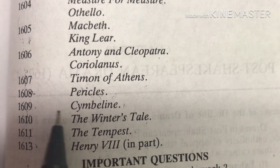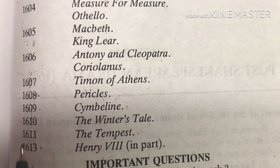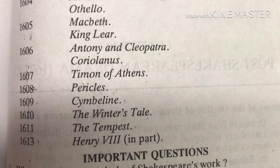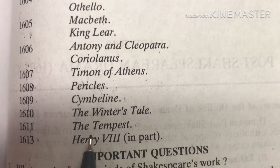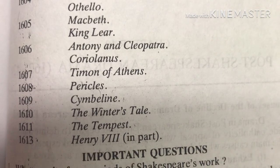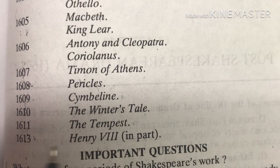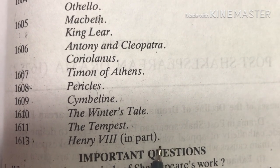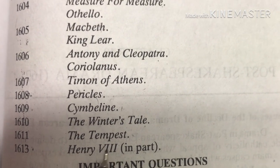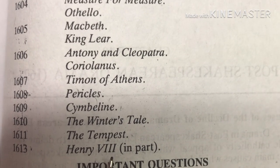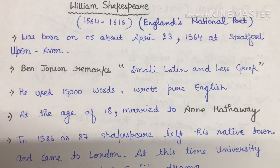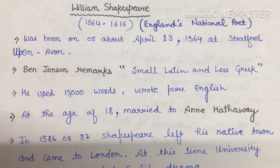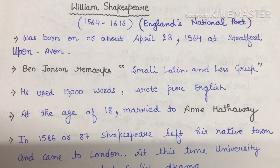In 1608 — Pericles. In 1609 — Cymbeline. In 1610 — The Winter's Tale. In 1611 — The Tempest. In 1613 — Henry 8, completed by Fletcher. This was all about William Shakespeare, and from tomorrow I'll come up with summaries of his works one by one.